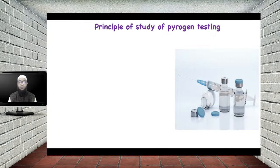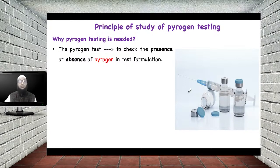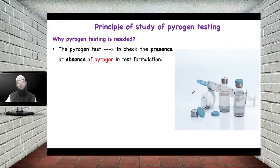Let us start with the principle of pyrogen testing. The pyrogen test is needed to check the presence or absence of pyrogen in the test formulation — generally a parenteral formulation. If it contains pyrogen, that batch of the parenteral formulation should not be passed. Only if it passes pyrogen testing — meaning it does not contain pyrogen — can the parenteral formulation be sent to the market.